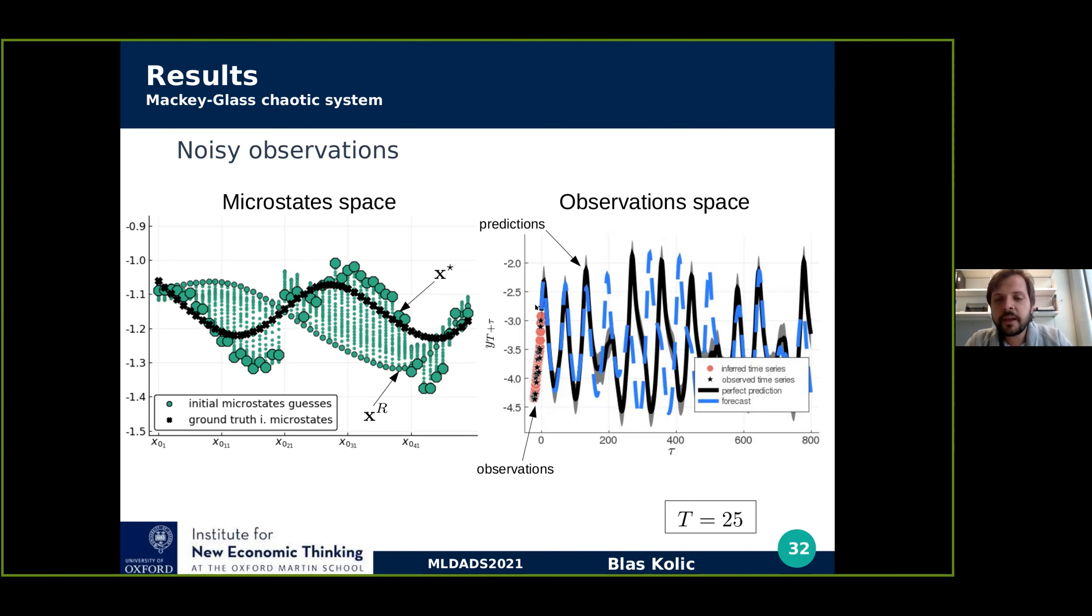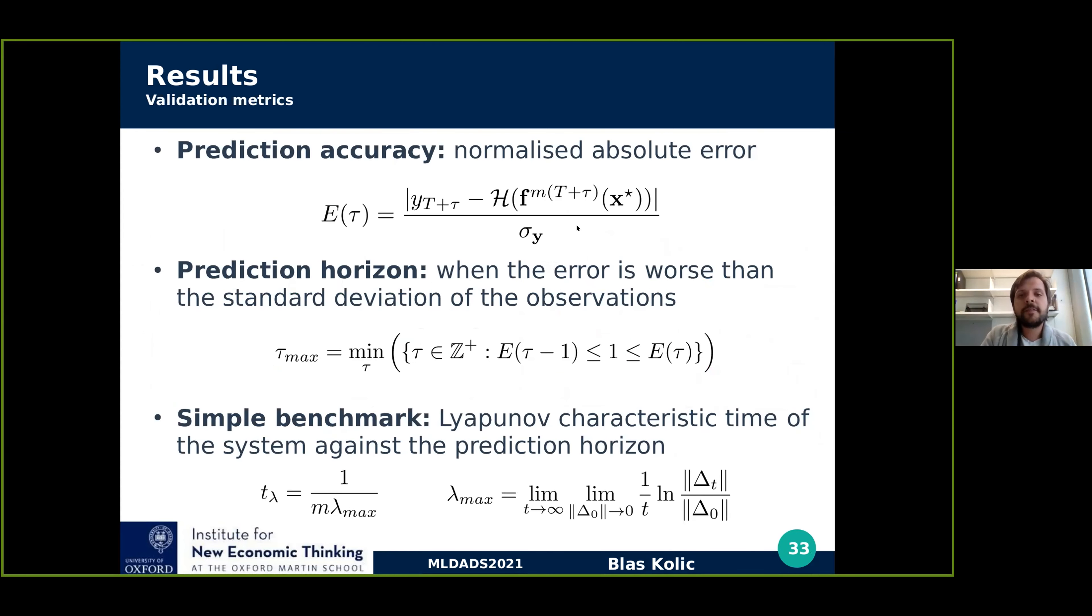So now, the next step is to validate how well the predictions are over the course of time. So we propose the following validation metrics. The first one is just a normalized absolute error between a perfect prediction using the ground truth and a model generated prediction using the inferred microstates. So for tau greater or equal to zero, we have out of sample predictions and we normalize by the standard deviation of the data. When it's higher than one, we say that the predictions already diverge because they are in the scale of the deviation of the data.